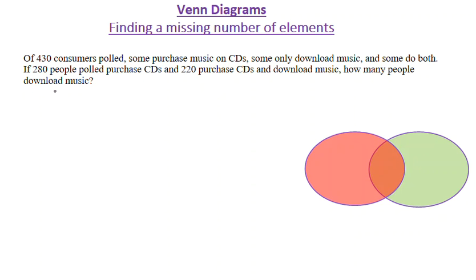In this video we will be discussing how to find a missing number of elements using a Venn diagram. In this question, of 430 consumers surveyed, some purchase music on CDs, some only download music, and some do both. So there are two groups of people — some people only purchase music on CDs, others download music, and some people do both, which is an intersection between two sets.